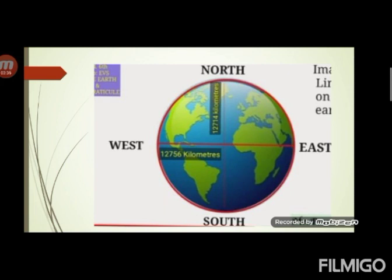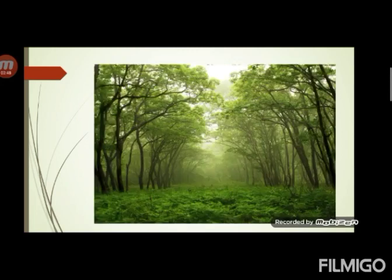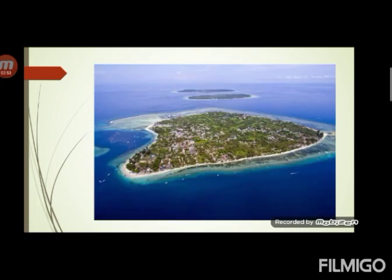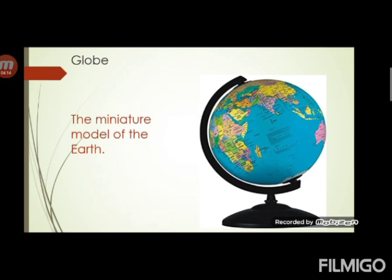It is impossible to actually draw lines on the earth due to oceanic water, uneven nature of land, forest, innumerable islands of different sizes, and buildings. To overcome these difficulties, geographers — scientists whose area of study is geography — developed a miniature model of the earth in the form of a globe. This can be used to determine location on the earth. We can actually draw lines on the globe, though not on the earth. They are imaginary lines on the earth.